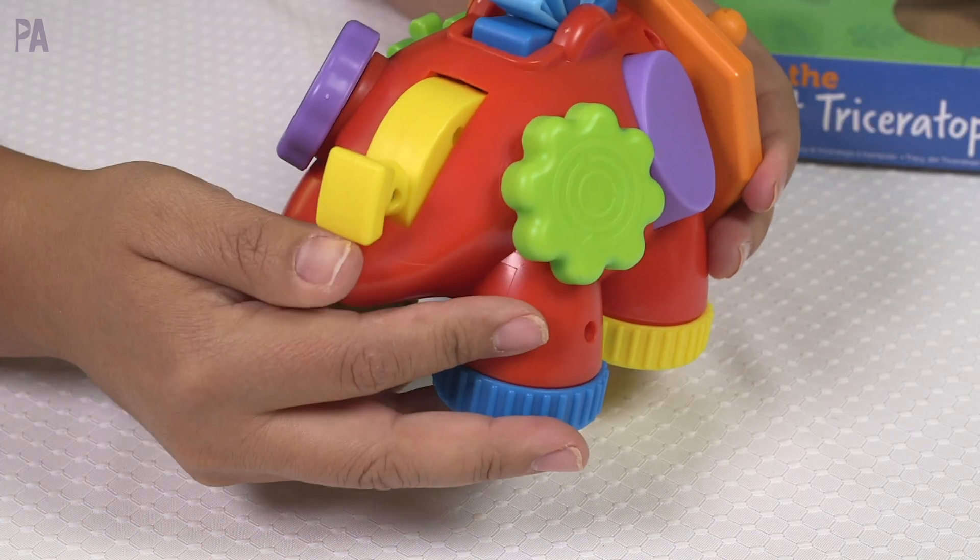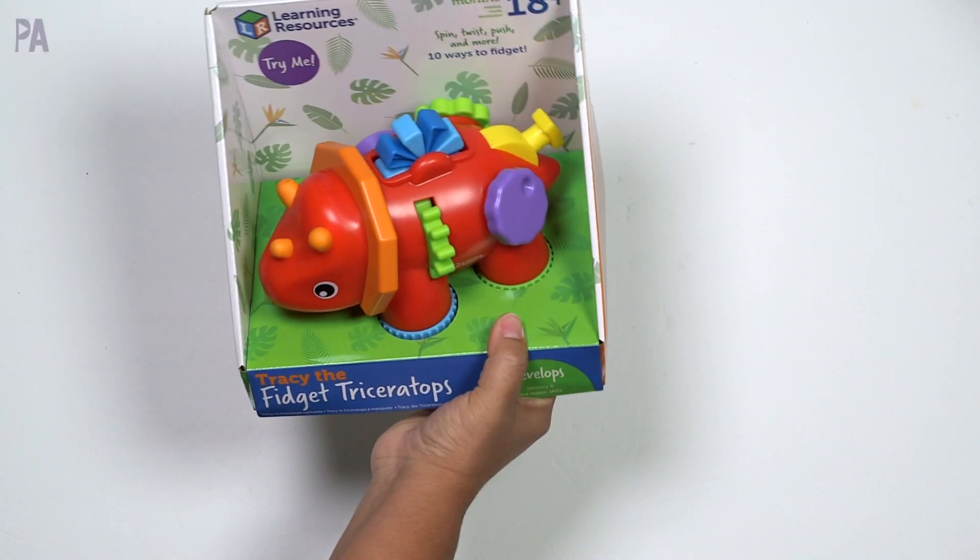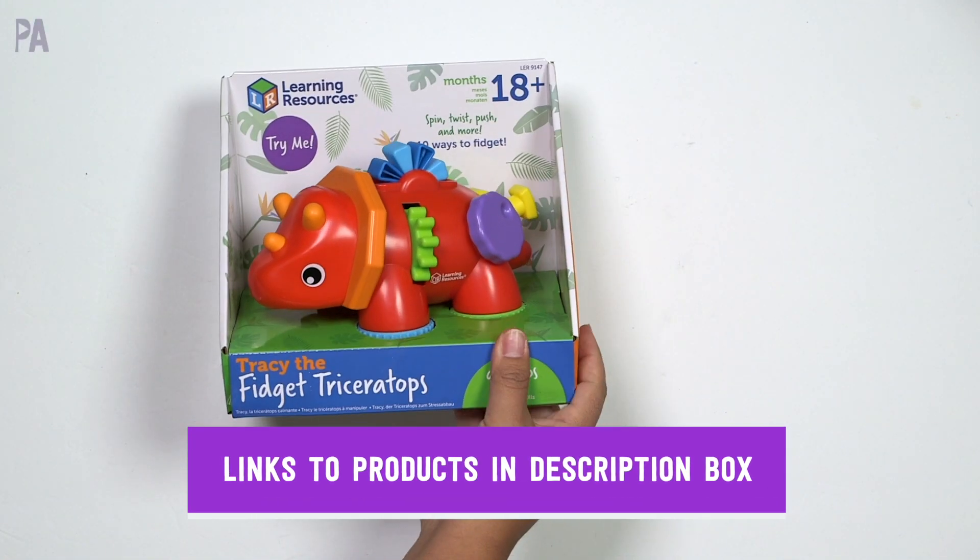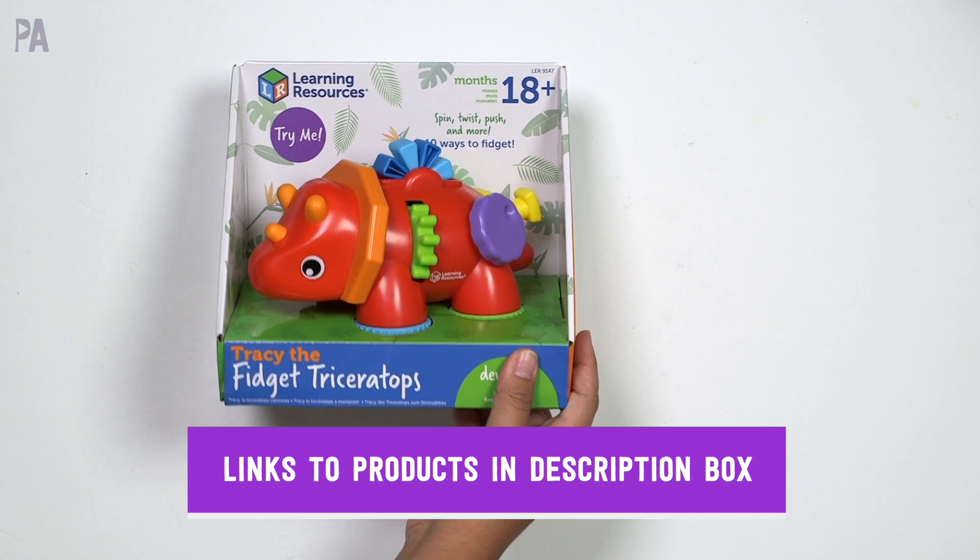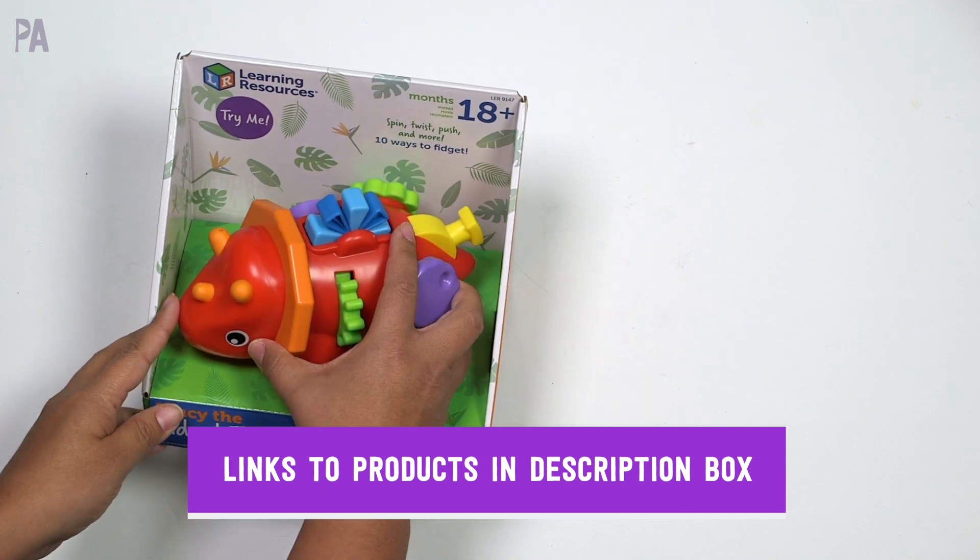Tracy the Fidget Triceratops. Try saying it three times fast because it is not easy. It's a great toy with lots of different fidgets on it and a dinosaur. For ages 18 months and up I have found the cutest little fidget triceratops I have ever seen. It's Tracy the Triceratops.